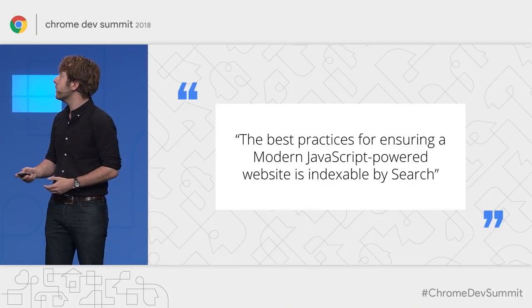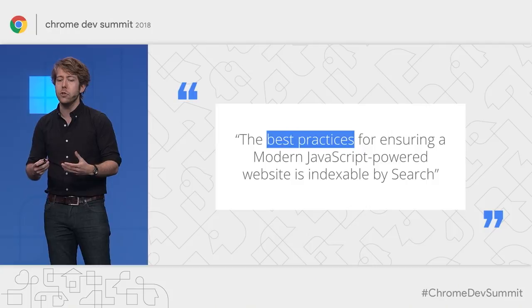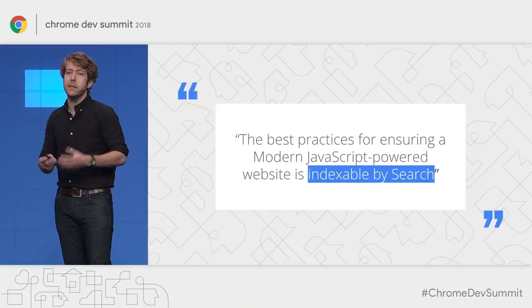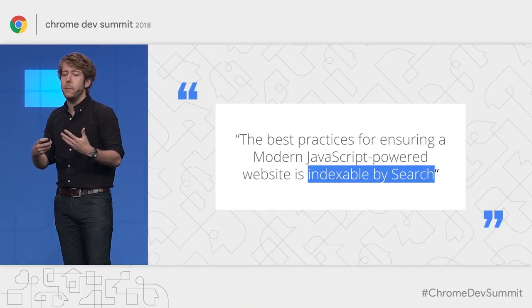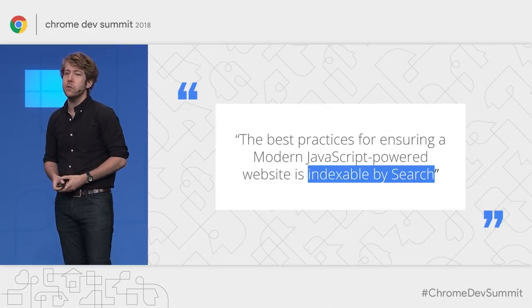But what do we really mean by this? By best practices, we mean what every developer should know — the techniques, knowledge, tools, and approach and process. By modern JavaScript-powered website, it means websites which use modern JavaScript frameworks for their front end, and are probably rendering their HTML in JavaScript on the client side. They're typically single-page apps, but this applies to any website that uses front-end JavaScript, including those powered with Ajax or WebSockets. And by indexable by search, we mean the content can be understood by Google Search — though these rules apply to other web crawlers too, such as other search engines or social media services.